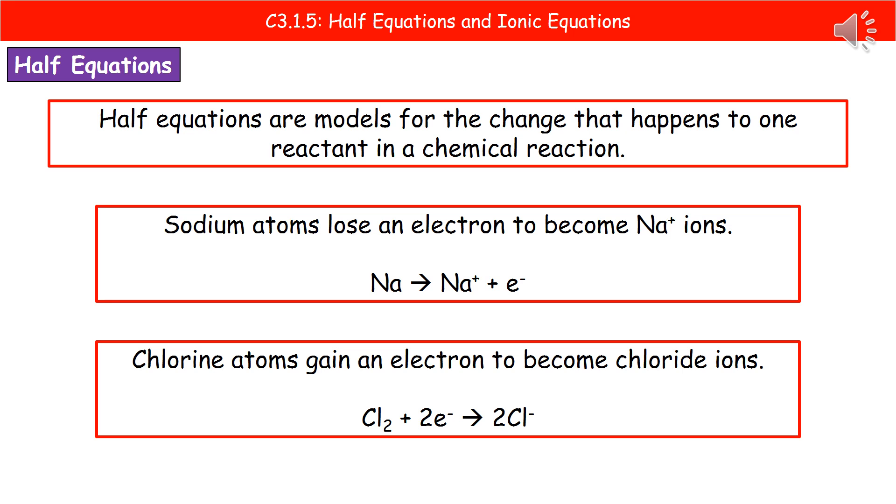Then that's going to form a sodium ion. It's in group one, therefore it has a single positive charge. And we've lost an electron. We can't ignore that. So you have to put the plus E minus. And the symbol there, E minus, is for an electron.